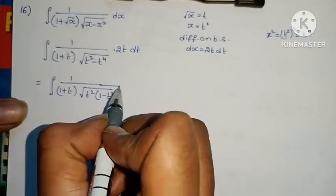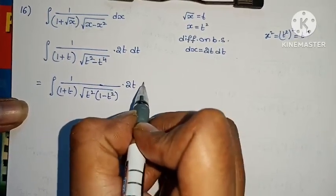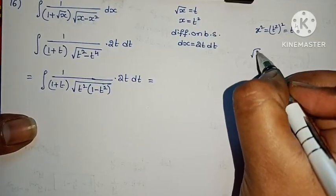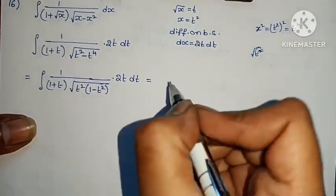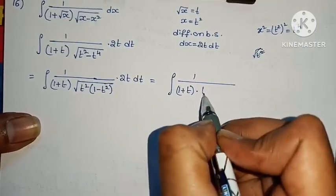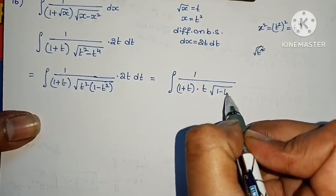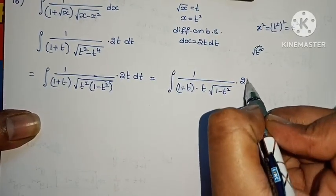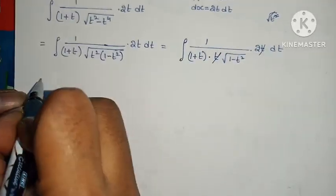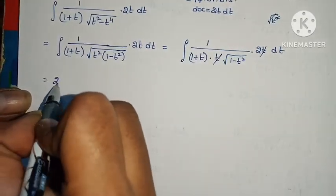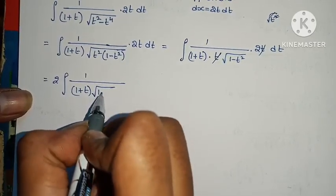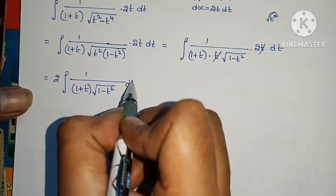We get 1 minus t squared into 2t dt. Root of t squared with square root cancels. So the integral becomes integral of 1 by (1 plus t) into t times root of (1 minus t squared) into 2t dt. The t and t cancel.